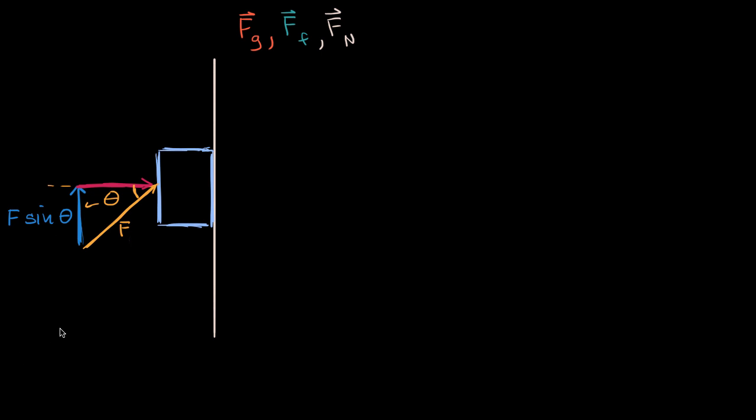We've seen that in previous videos. And it comes straight out of right triangle trigonometry. And the magnitude of the horizontal component, that is going to be F cosine theta. This side right over here is adjacent to the angle.